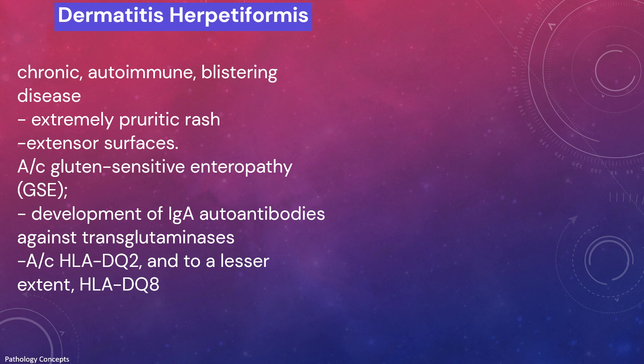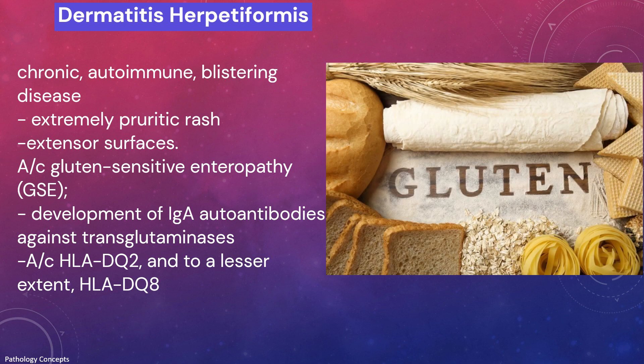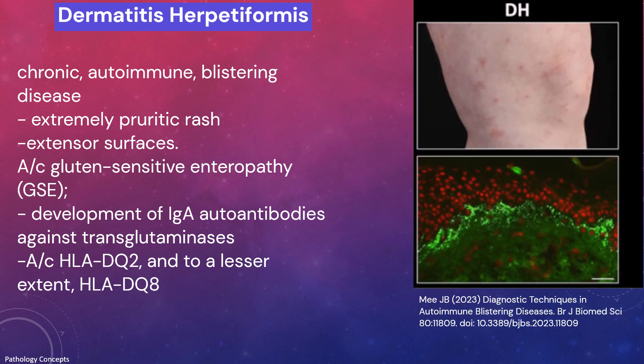Dermatitis herpetiformis is a chronic autoimmune blistering disease causing an extremely pruritic rash that predominantly affects extensor surfaces. It is closely associated with gluten-sensitive enteropathy; both conditions are characterized by development of IgA autoantibodies against transglutaminase. It is associated with HLA-DQ2 and HLA-DQ8. First-degree relatives of patients with celiac disease or dermatitis herpetiformis are more likely to be affected. Epidermal transglutaminase 3 may be the dominant antigen against which IgA autoantibodies are formed.